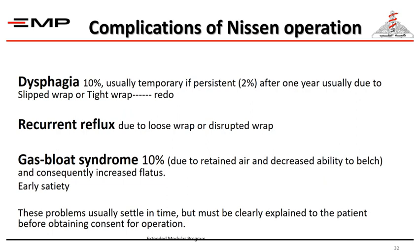Complications of the Nissen operation include dysphagia, which occurs in about 10 percent and is usually temporary and resolves spontaneously. If persistent — occurring in about 2 percent — a redo operation is needed to unwrap and redo the valve, as dysphagia is usually due to a slipped or tight wrap. Recurrent reflux is due to a loose or disrupted wrap. Gas bloat syndrome is common in up to 10 percent due to retained air and decreased ability to belch. Early satiety may also occur but usually settles with time.